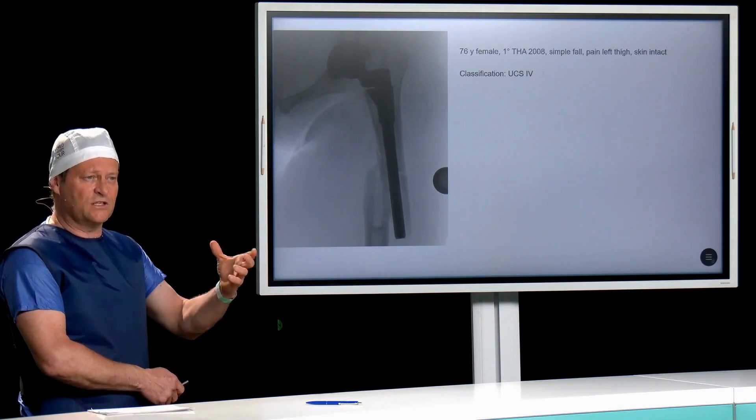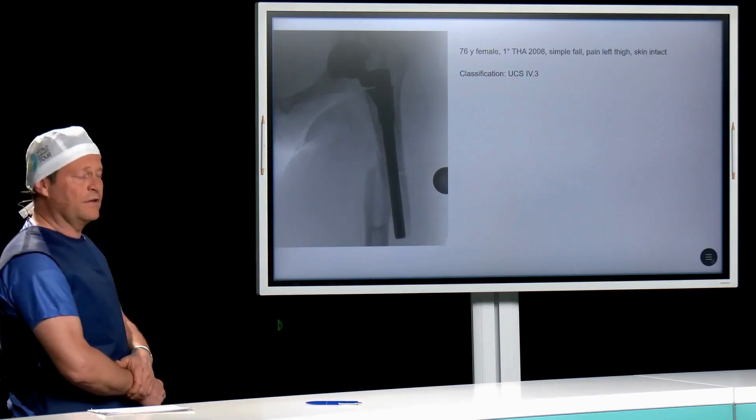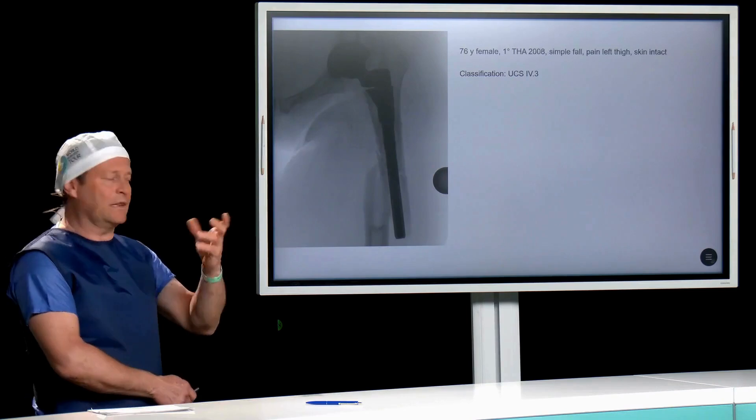The femur and AO classification is the number three, 4.3, and then the fracture is somewhere around the bed of the prosthesis, so it's a type B.